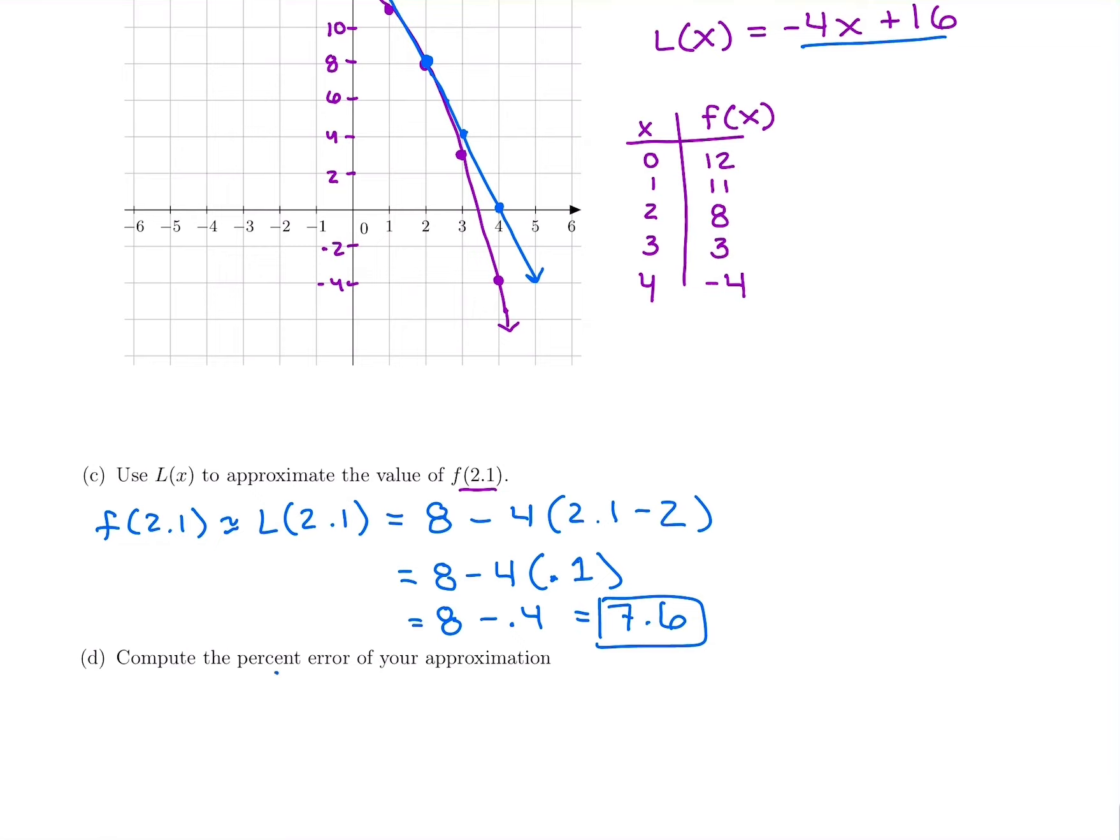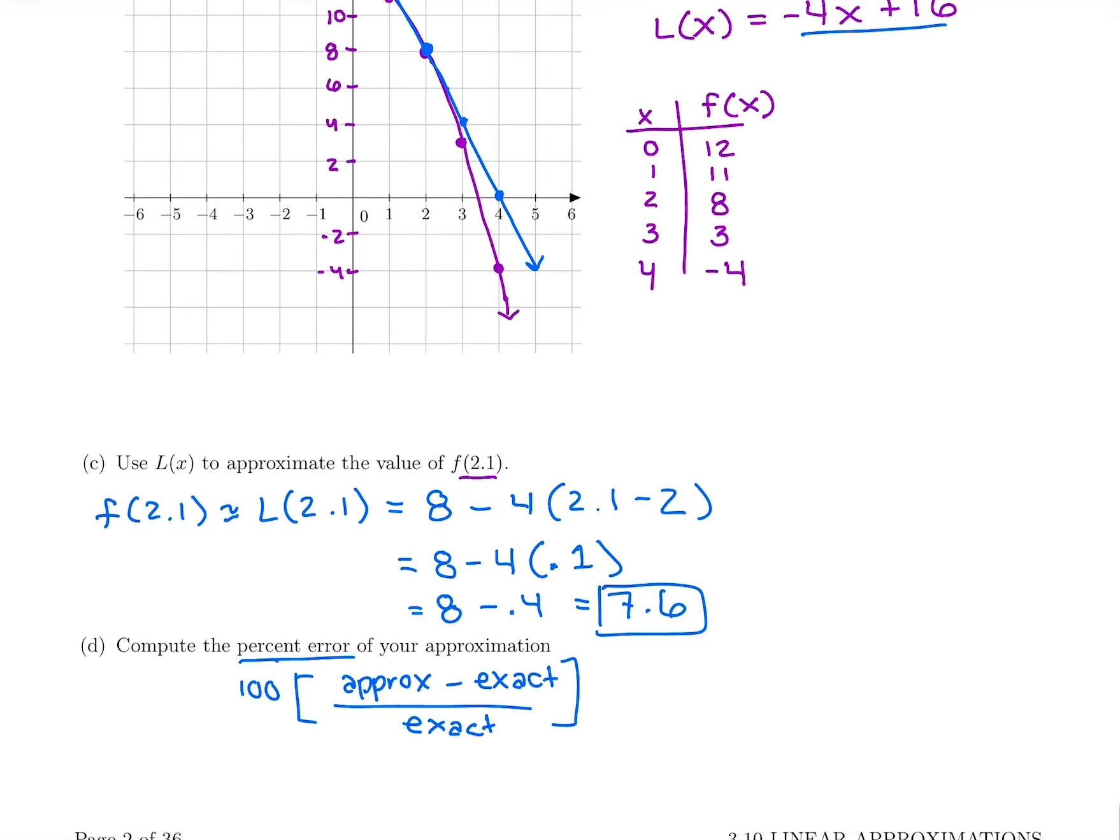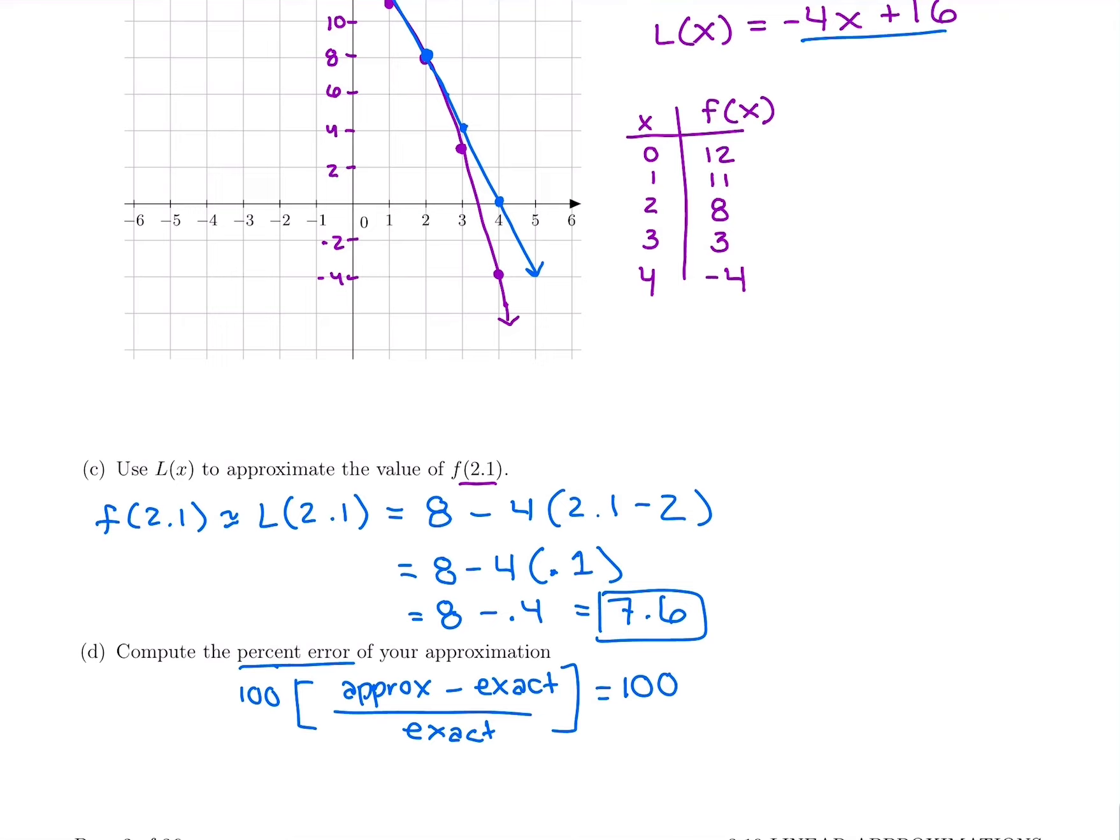So something that we might not be able to calculate in our head, we should be able to do now that we made it a linear function. And now we'll see how far off we are by computing our percent error. The formula from the last video is 100, you do the approximate minus the exact, so what we just got for L(x) minus the exact f(x) over the exact. So doing that here, I'd have to grab my calculator and figure out what is f(2.1). We know L(2.1) was 7.6. The exact value should have actually been 7.59. By plugging into the original function using a calculator, f(2.1) is actually 12 minus 2.1 squared is 7.59. So we did a very good job. We're very close. And when we calculate that percent error, we are only 0.13% off.